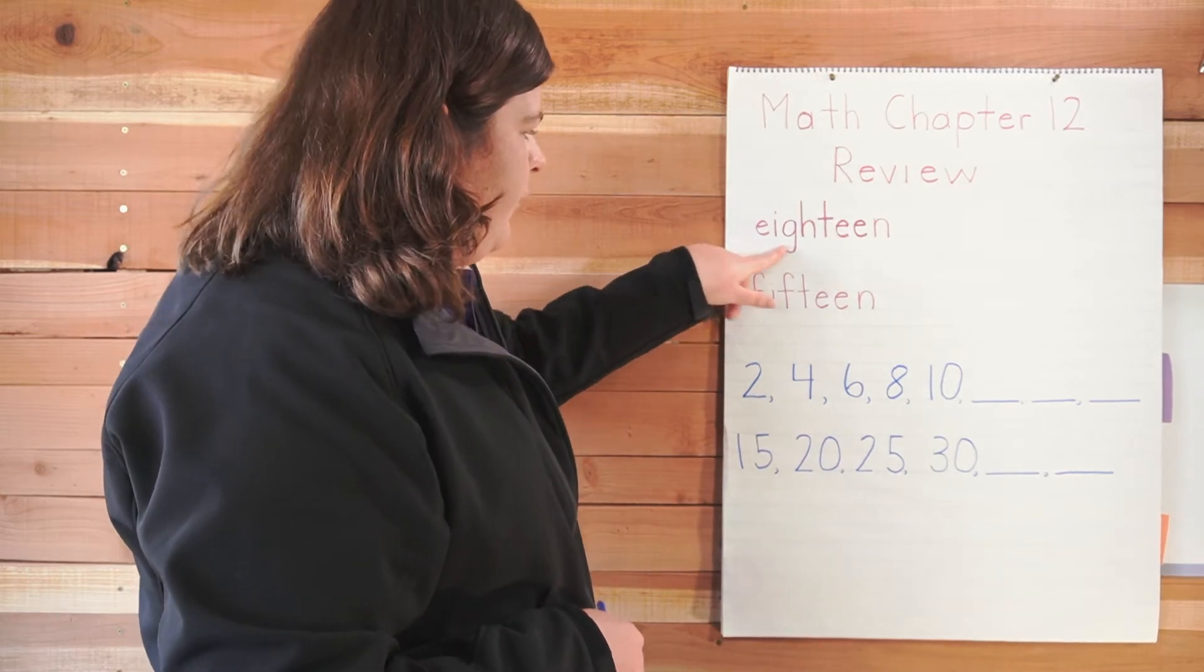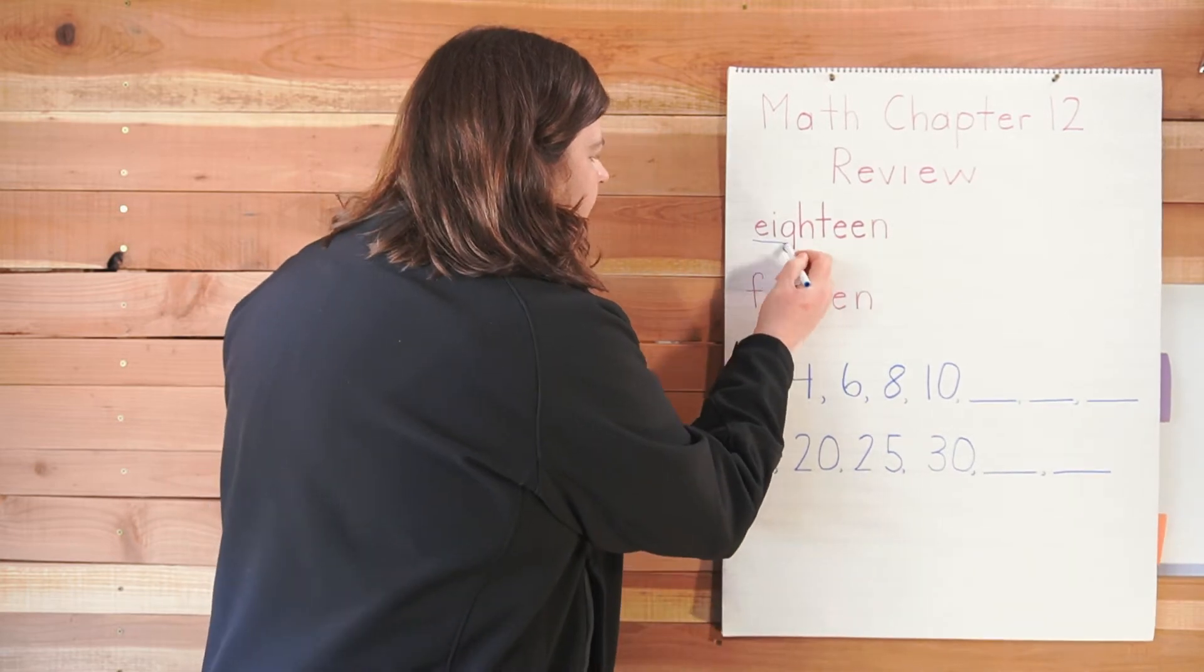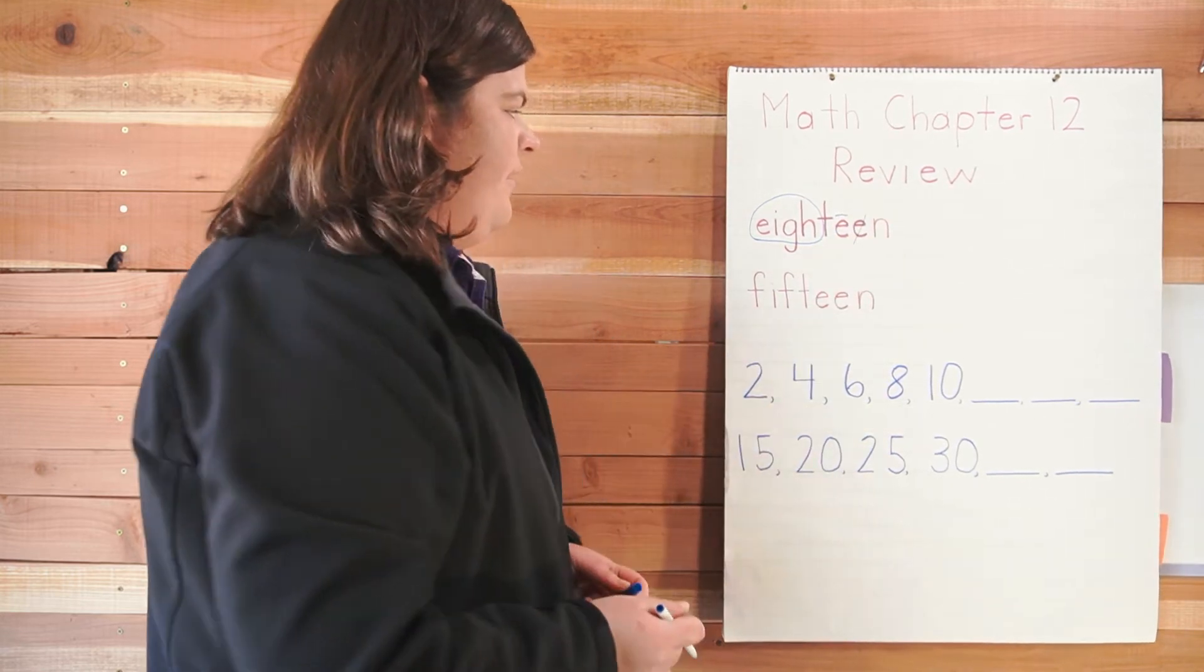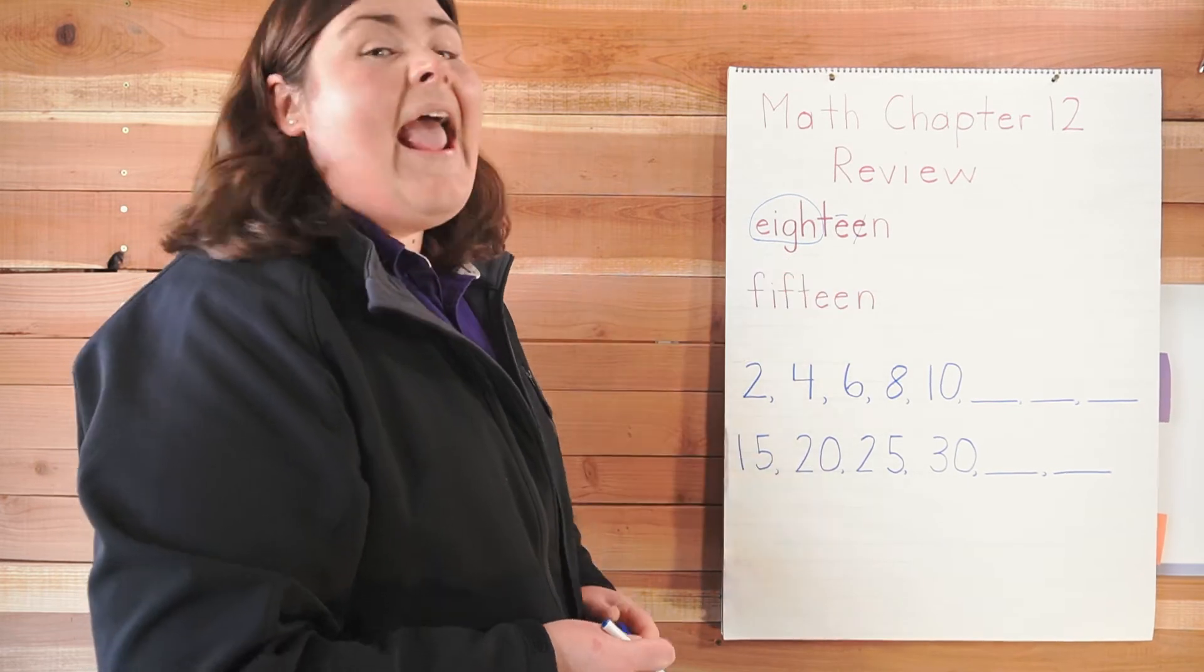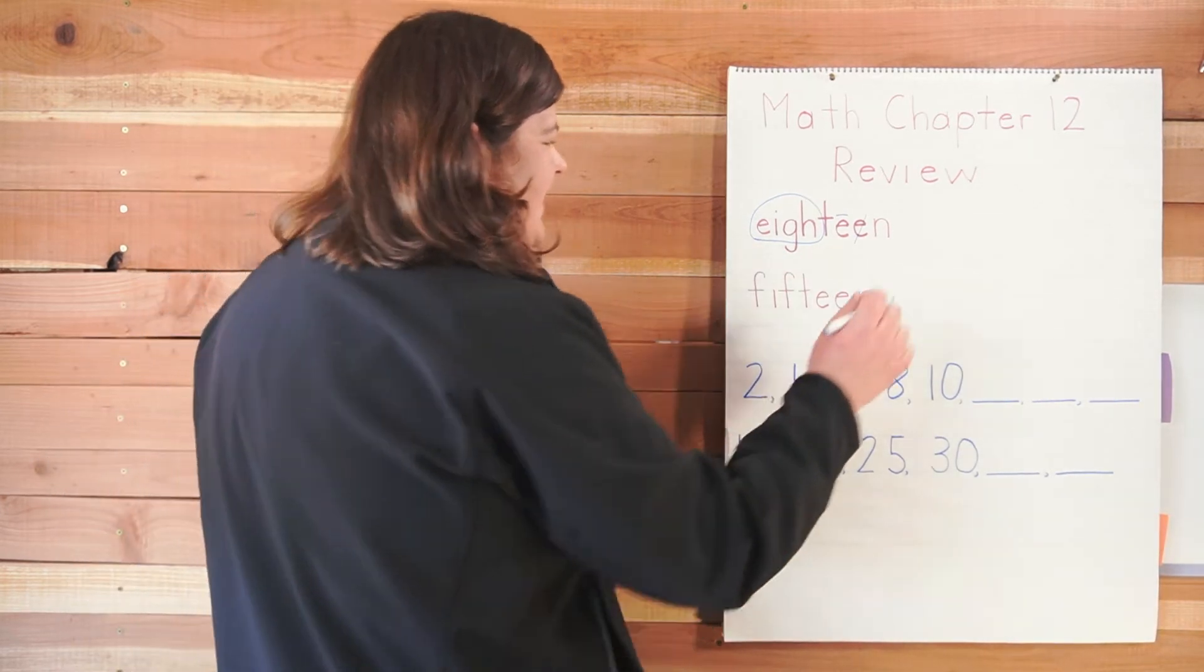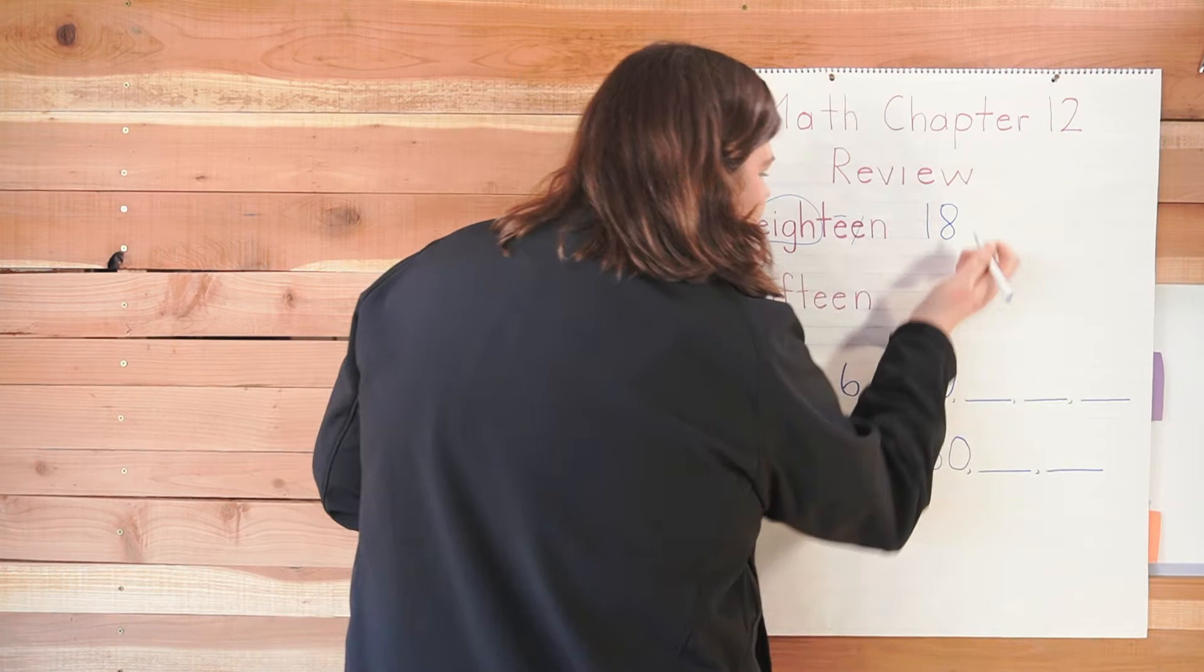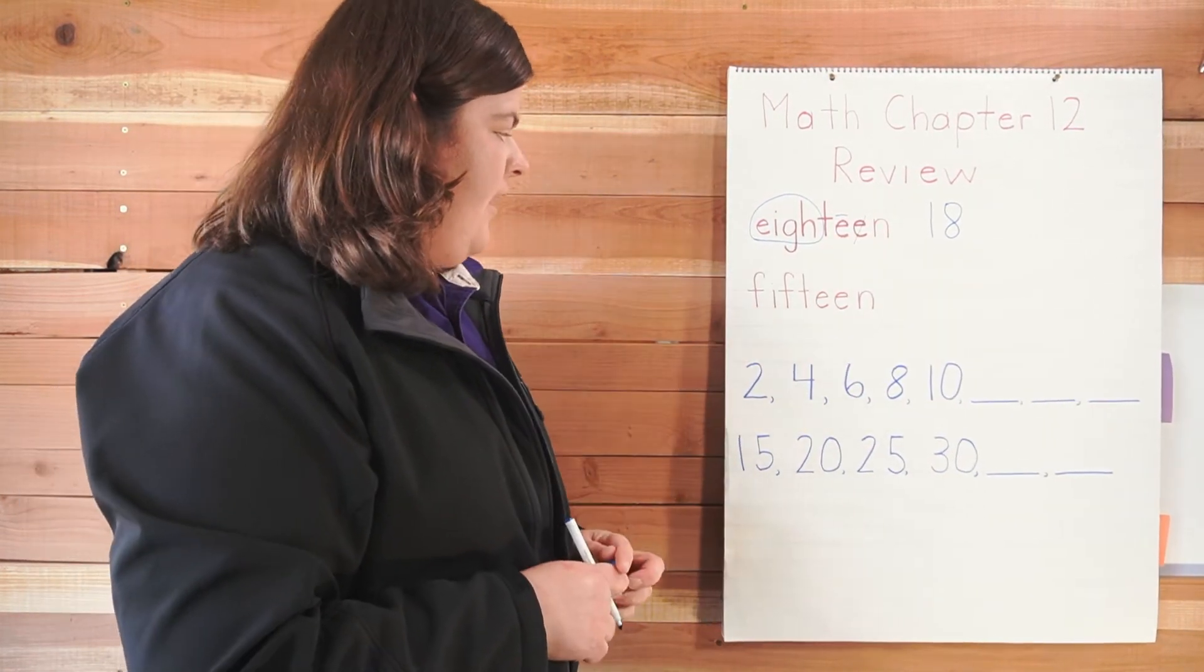Okay, let's look at this word. What word is this? It has 'eight' and two vowels, so it's 'eight-een,' eighteen. We're going to write the number eighteen: one and an eight. That number is eighteen.